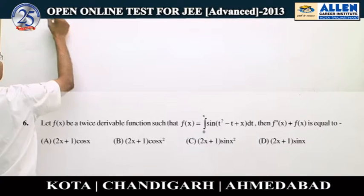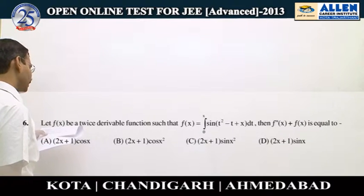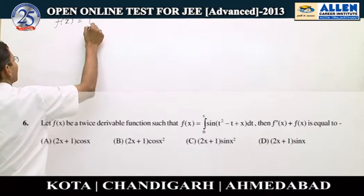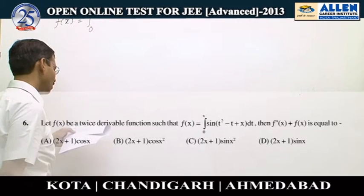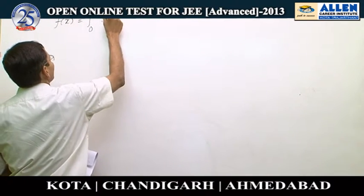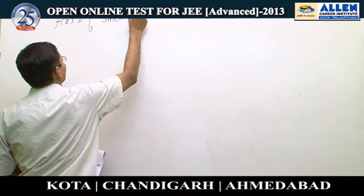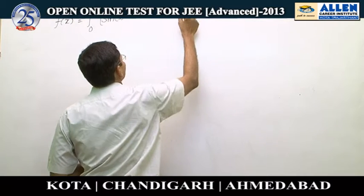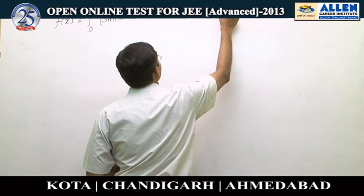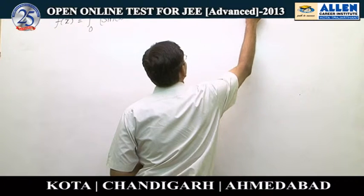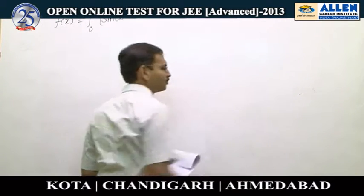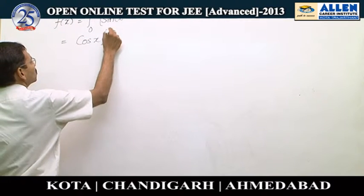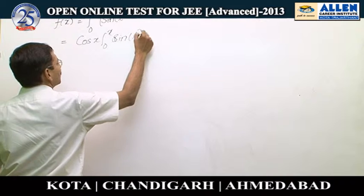Question number 6. We will calculate f''(x) + f(x) by differentiating f(x). f(x) can be written as an integral from 0 to x. Using the formula sin(a + b), it is ∫[sin(t² - t)·cos(x) + sin(x)·cos(t² - t)] dt. Let us split it as cos(x)·∫₀ˣ sin(t² - t) dt plus sin(x)·∫₀ˣ cos(t² - t) dt.